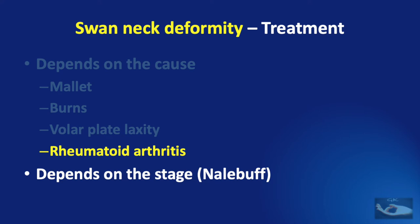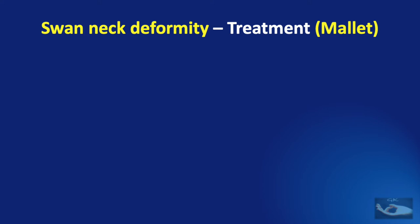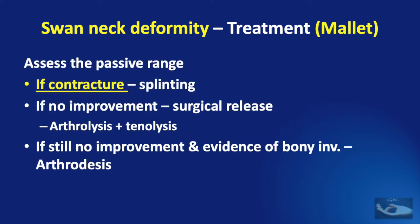In conditions of rheumatoid arthritis, the treatment plan will vary according to the stage of the disease as classified by Nalebuff. In mallet injury, the swan neck deformity may appear either immediately or later depending on the laxity of the volar plate of the PIP joint. In the acute situation, correction of the mallet finger itself will treat and prevent the swan neck. In a chronic mallet deformity, we assess passive range of movement at the DIP joint: if there is a contracture, we splint it; if there is no improvement on splinting, a surgical release consisting of arthrolysis and tenolysis is done; if there is still no improvement with bony involvement, arthrodesis of the DIP joint should be done.